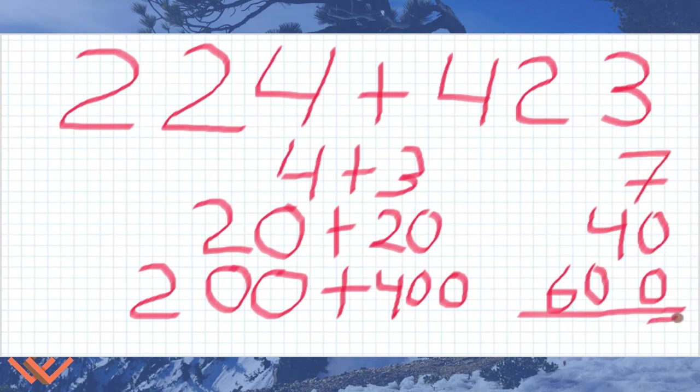We have 7 in the ones column, 4 or 40, 4 tens in the tens column, and then we have 6 or 600 in the hundreds column. And there's our answer, 647. Breaking it down into smaller pieces and then adding it up is one of the strategies that I have. It's just one strategy that I put down and I model on the paper here.